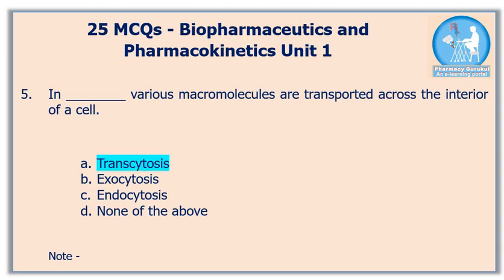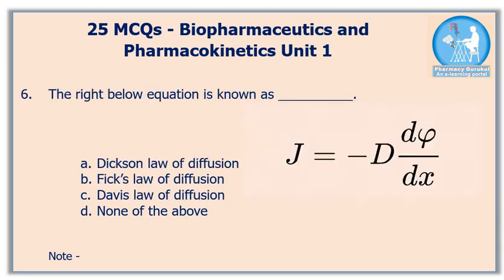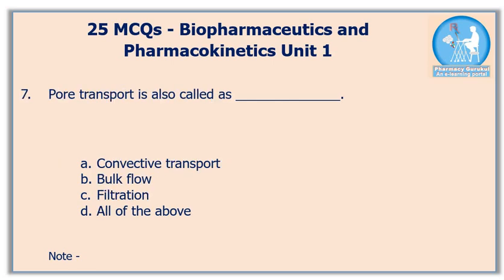Question number six: the equation shown below is known as — the correct answer is option B, Fick's law of diffusion. Question number seven: pore transport is also called as — the correct answer is option D, all of the above.